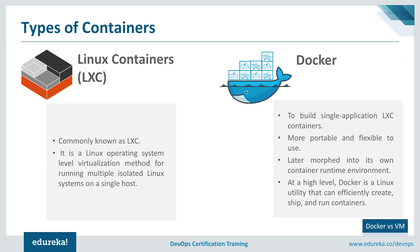There are two different types of containers: Linux containers and Docker containers. The Linux container is a Linux operating system-level virtualization method for running multiple isolated Linux systems on a single host. Docker started as a project to build single-application Linux containers, introducing several changes that make containers more portable and flexible. At a high level, Docker is a Linux utility that can efficiently create, ship, and run containers.